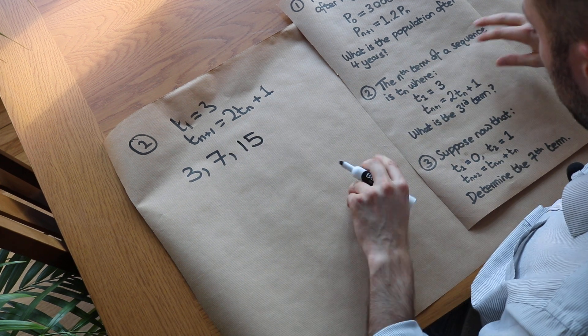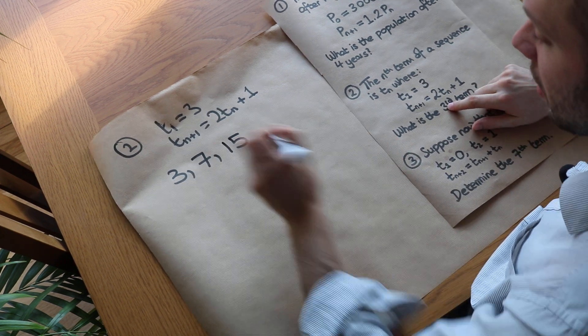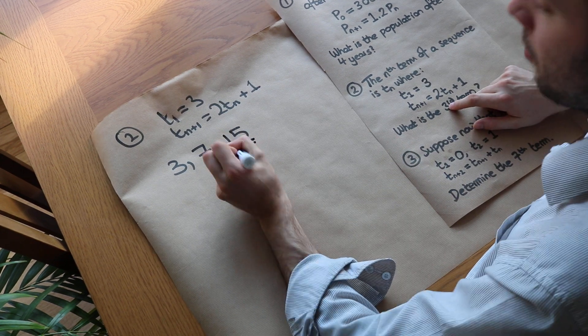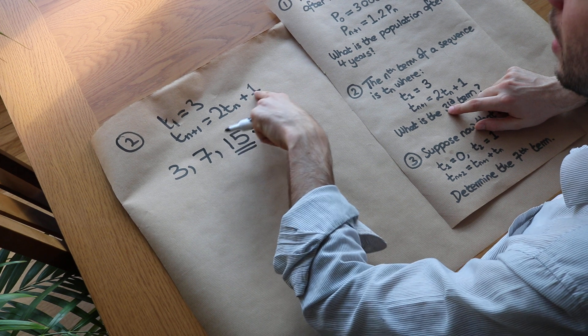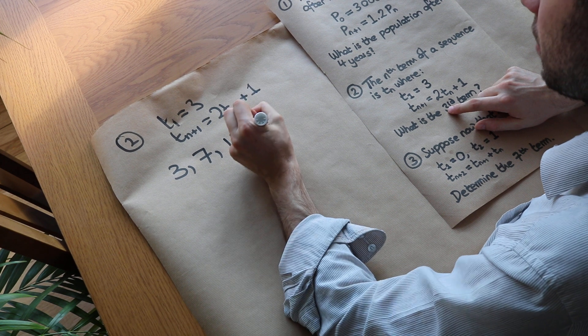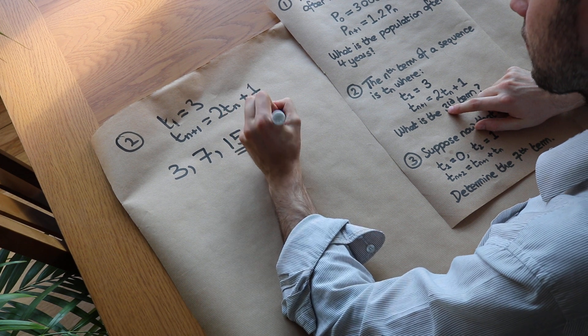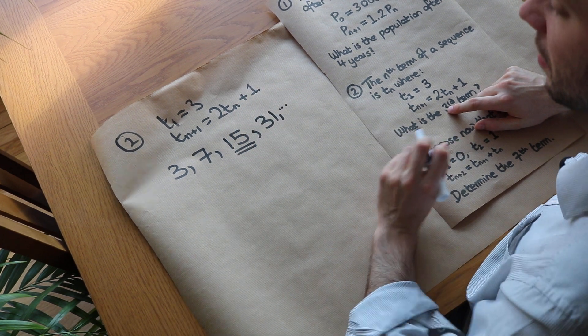We've got the third term — that's the answer — but we could go further if we wanted: 2 times 15 is 30, plus 1 is 31, and so on.